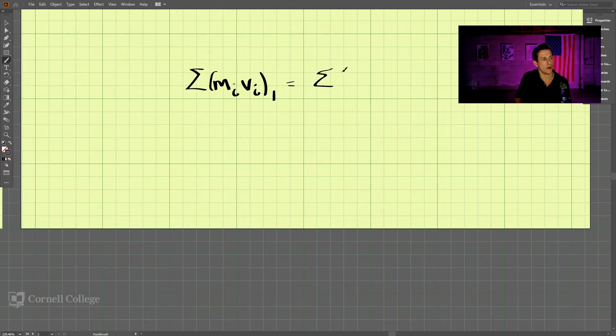equal to the sum of all the masses and all the velocities at time 2. So this can govern something, one being prior to an impact, and two after the impact.